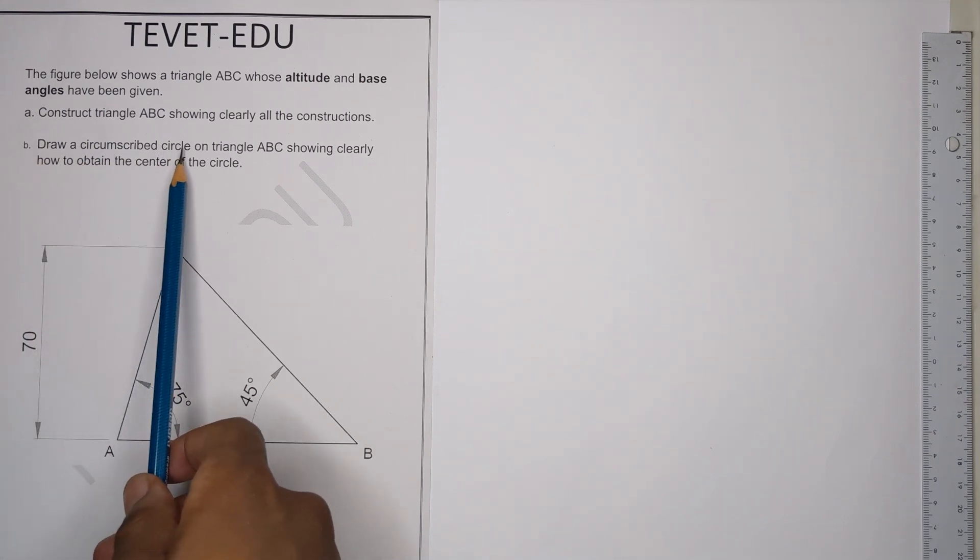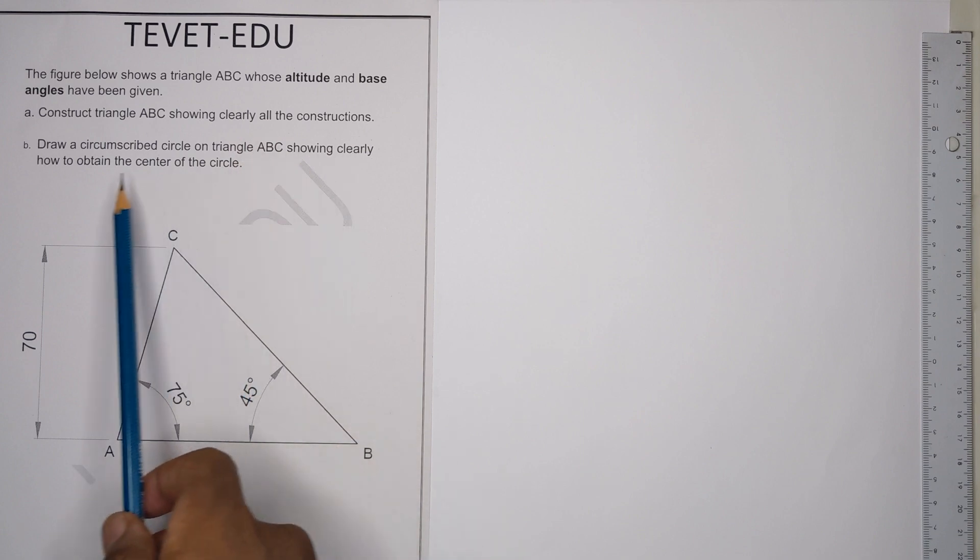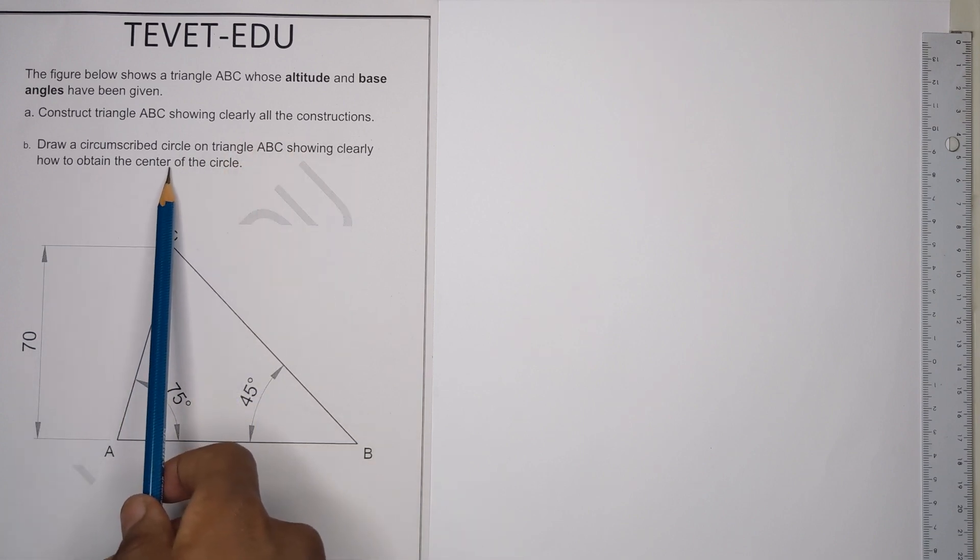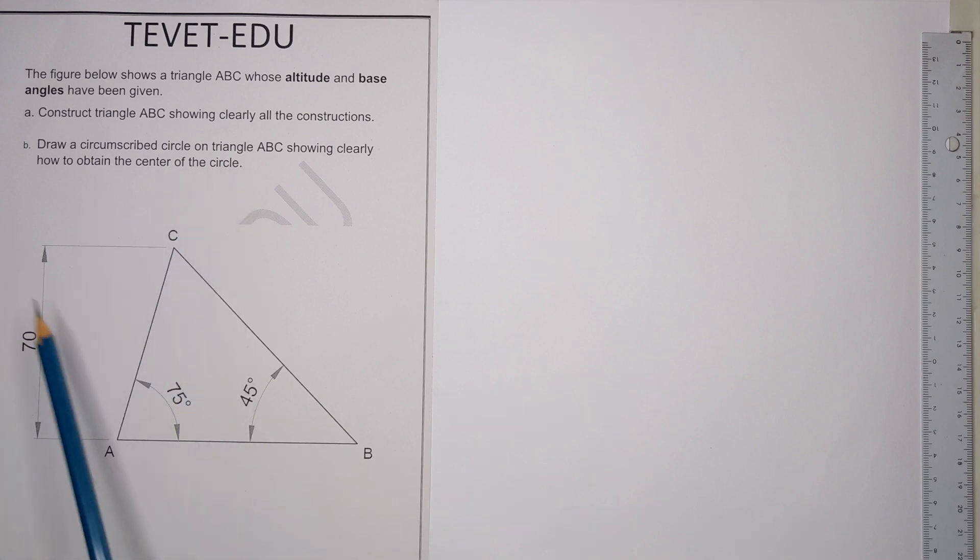Part B says draw a circumscribed circle on triangle ABC, showing clearly how to obtain the center of the circle. So let's start with the first question here.